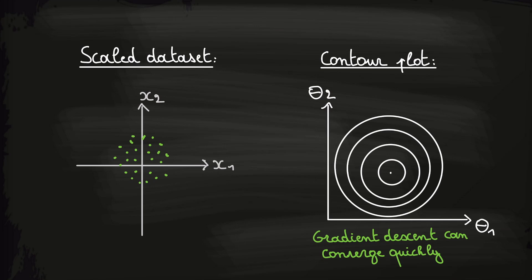So to get back to mean normalization. If we now plot the scaled dataset again, we might get a figure that looks as follows. As you see all data will now be centered around 0. This will give us a contour plot that's less elliptical and thus gradient descent can converge quicker.